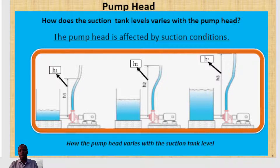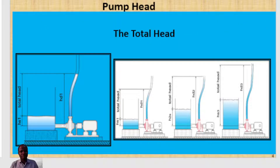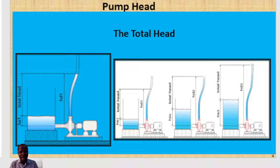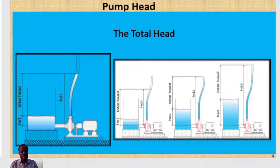Now you also need to know another concept, which is called the total head. A much more useful measure of head is the difference between the liquid level in the suction tank and the head in the vertical discharge pipe. That difference in liquid level at your discharge end of the pump and what you have at the suction tank level is what is referred to as the total head that the pump can produce.